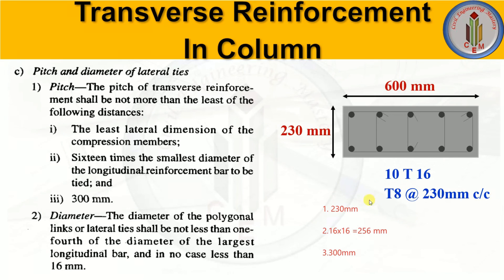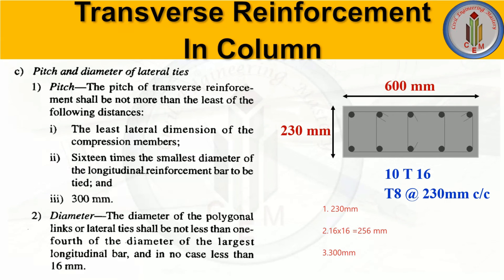For the diameter of the polygonal link or lateral tie, it shall not be less than one-fourth of the diameter of the largest longitudinal bar, or in no case less than 6 mm. One-fourth of 16 mm = 4 mm, but in practice we use 8 mm as the minimum diameter for lateral ties.